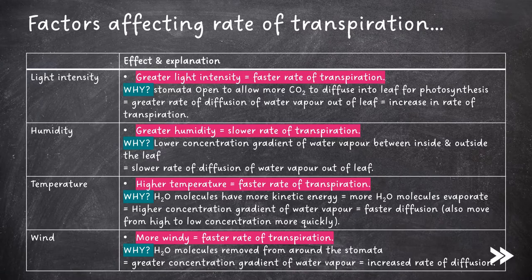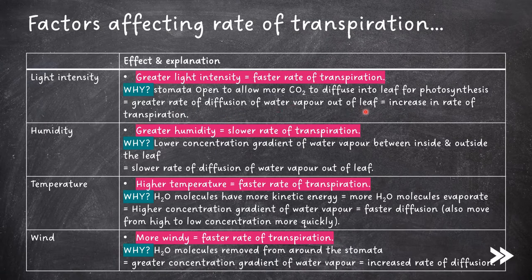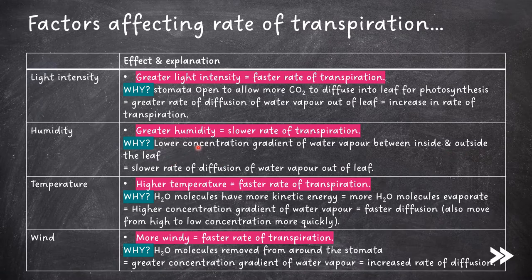There are four main factors that affect the rate of transpiration. First, light intensity: greater light intensity increases the rate of transpiration because the stomata open to allow carbon dioxide to diffuse into the leaf for photosynthesis, increasing the rate of diffusion of water vapor out of the leaf. Another factor is humidity: greater humidity slows the rate of transpiration because there is a lower concentration gradient of water vapor between inside and outside of the leaf, so the rate of diffusion of water vapor out of the leaf decreases.